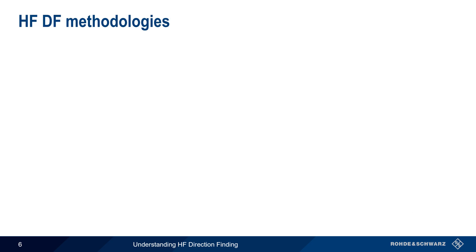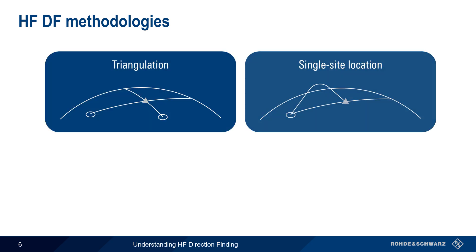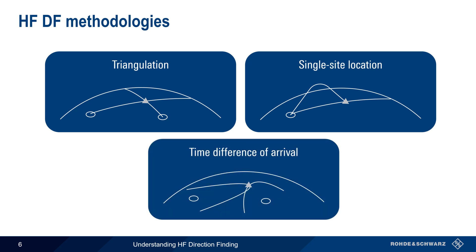Next, let's take a look at the three most important HFDF methodologies: namely triangulation, single site location, and time difference of arrival. We'll spend the remainder of this presentation discussing each of these methodologies and their relative advantages and disadvantages.